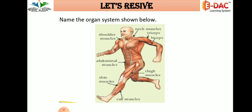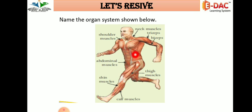Next, name the organ system shown below. This system includes shoulder muscles, neck muscles, biceps, triceps, abdominal muscles, thigh muscles, skin, shin muscles, and calf muscles. What system is it? It is our muscular system. Right?